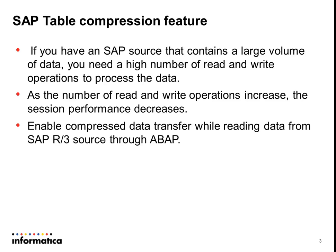If you have an SAP R3 source with a huge volume of data, the extraction is expected to take longer time as it requires a higher number of read and write operations. As the read and write operations increase, Power Exchange for SAP session performance decreases. The table compression feature helps in reducing the number of read-write operations between the Power Center server and SAP box by compressing the source data. One could use this feature while extracting data from an R3 table using the ABAP integration method.